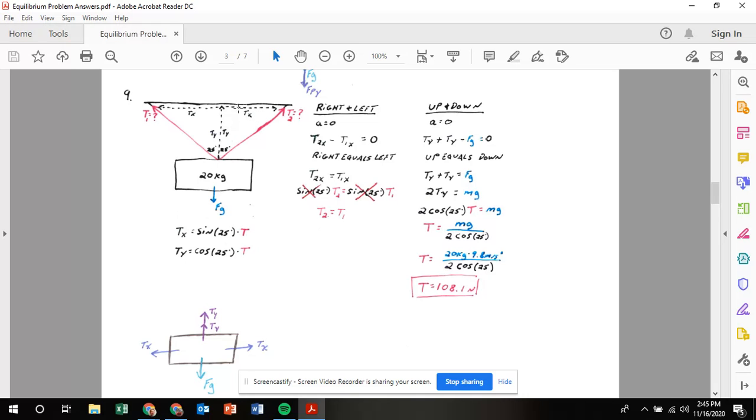Solving for tx, tx is the opposite side of this triangle, so I'm using sine of 25 times t. T in the y direction is the adjacent side of this triangle, so that's cosine of 25 times the hypotenuse t. If I try to solve this doing right and left first, my tension x to the right equals my tension x to the left. When I plug in, sine of 25t equals sine of 25t. If I cancel sine of 25 by dividing it out, I just get that this t equals this t, which we know because the angles are identical.